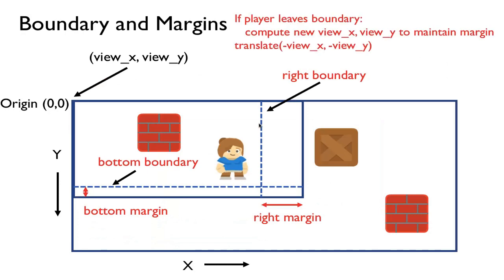Here's basically the algorithm. If the player leaves one of the four boundaries, we need to compute the new view_x and view_y to maintain the margin. If I move outside the boundary, I need to move view_x so that I'm still within the boundary, because everything will shift along as I scroll. So: I leave the boundary, I compute the new view_x and view_y to maintain that margin, and then I do a translate in the opposite direction so that the world below me moves, and my window compensates for my movement and keeps me within the boundary.